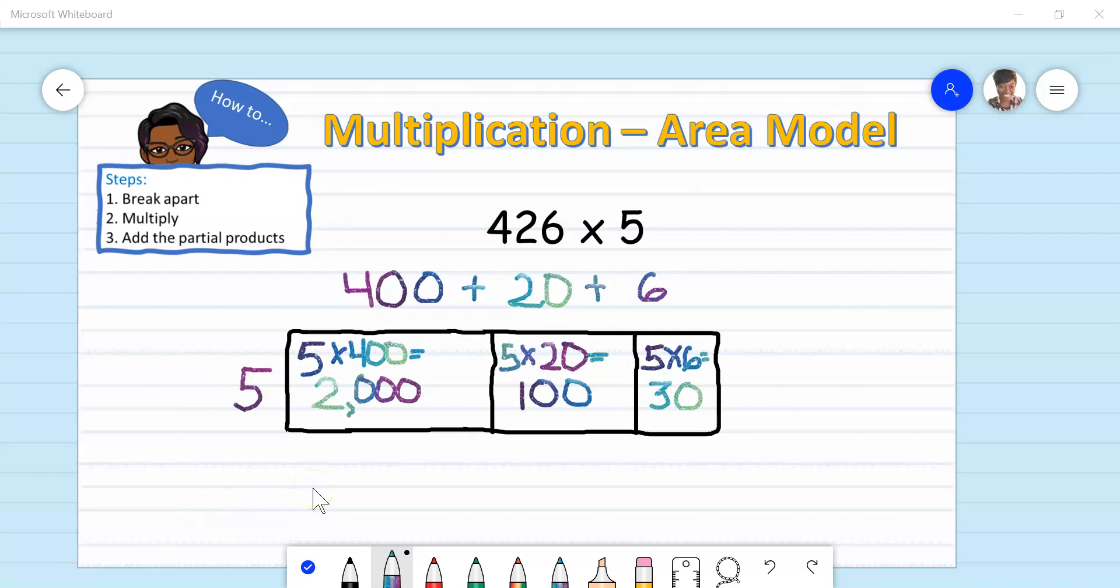Once I am done multiplying, I am now ready for part three, which is to add the partial products. I'm going to add 2000 plus 100 and 30. When adding the numbers, you can add them mentally, or if you choose, line it up vertically. Just keep in mind, when lining up your numbers, line it up according to place value: ones, tens, hundreds, and thousands.